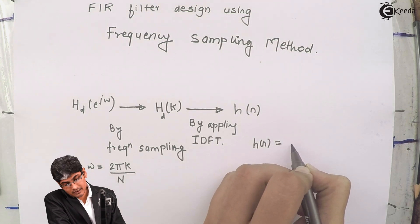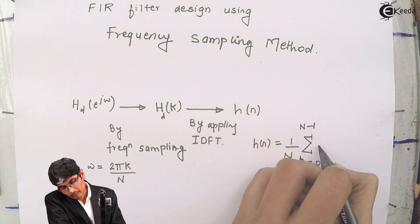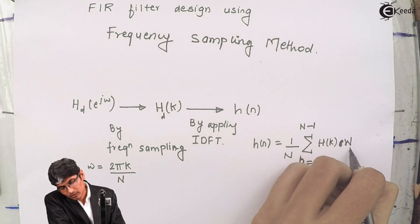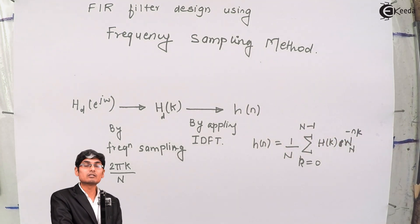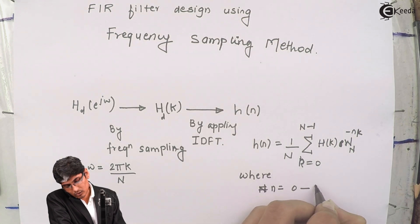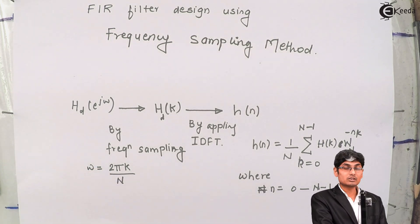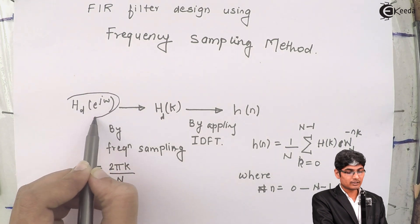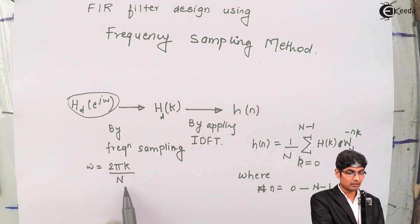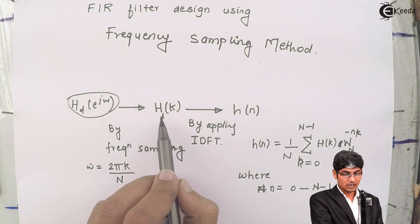The IDFT formula gives h of n equal to (1/N) summation for k going from 0 to N minus 1 of hd of k times W_N raised to minus nk. Here, small n ranges from 0 to N minus 1. So the methodology is: get hd of e raised to j omega from the user, apply frequency sampling by dividing omega into 2πk/N samples, obtain hd of k, apply IDFT on hd of k, and get h of n.